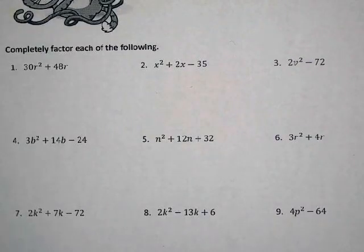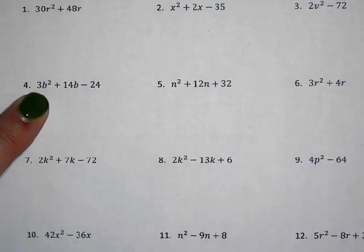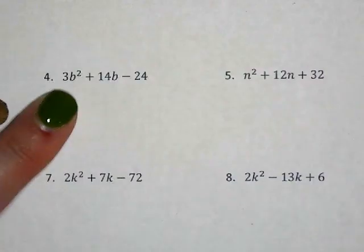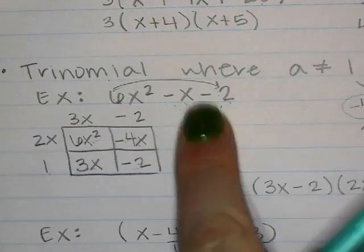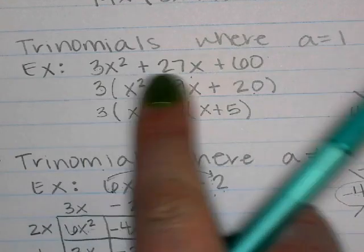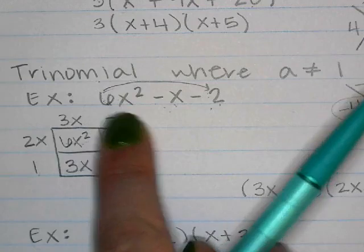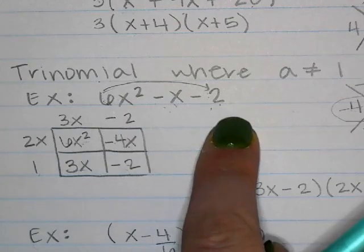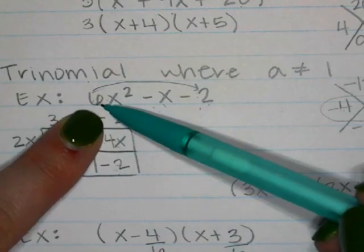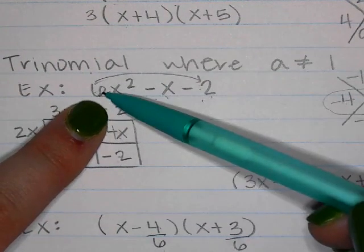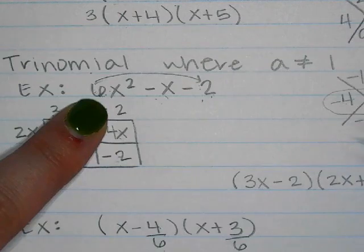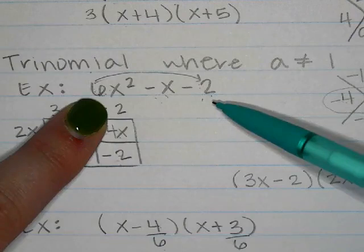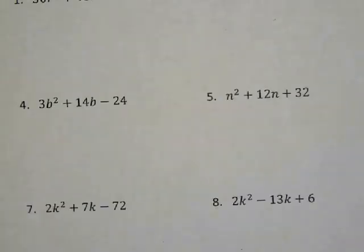Looking at number 4: the number in front — is the 3 a GCF we can divide out, or does it have to stay? It has to stay. So when the 3 in the front stays, you multiply it by the number at the end: 3 times negative 24 equals negative 72. We're looking for two numbers that multiply to negative 72 and add to 14 — we get 14 directly from the middle term.